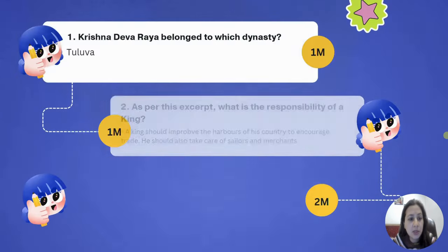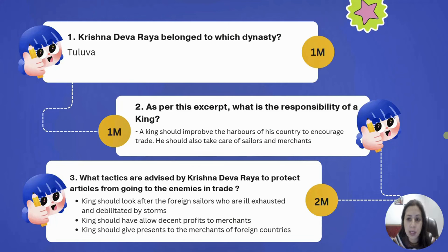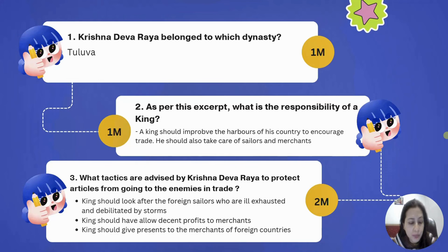The first question: Krishnadevarai belonged to which dynasty? Indirect question — Tuluwa. As per this excerpt, what is the responsibility of a king? A king should improve the harbors of his country to encourage trade and take care of sailors and merchants. Vijayanagara, in present-day Karnataka, had many seaports. Trade was the main reason for the prosperity of the kingdom. The third question about tactics to protect articles from enemies is a direct question answerable from the passage.